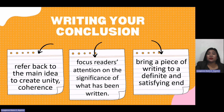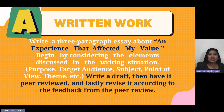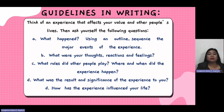When writing your conclusion, you should: first, refer back to the main idea and create unity and coherence; second, focus the reader's attention on the significance of what has been written; and third, bring the piece of writing to a definite and satisfying close. As for your written work, write a three-paragraph essay about an experience that affected your values. Begin by considering the elements discussed in the writing situation such as the purpose, target audience, subject, point of view, themes, etc. Here are the guidelines in writing — you may pause this video and read and ponder on this.